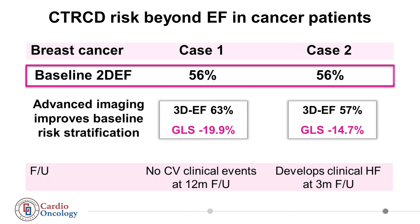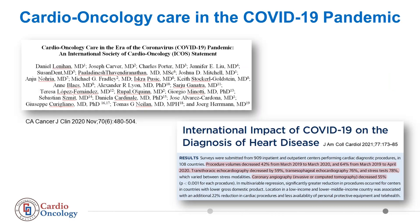We also need to consider restrictions for the use of 3D echo or strain in cardio-oncology imposed by COVID. This is a recent report from JACC. After analyzing the evolution of imaging testing in different cohorts of patients, the authors conclude that during the last year, transthoracic echo volumes decreased by 59%, and without any doubt these numbers also affect cancer patients.